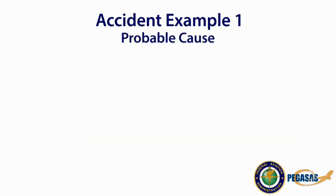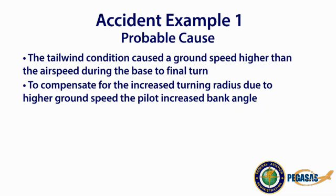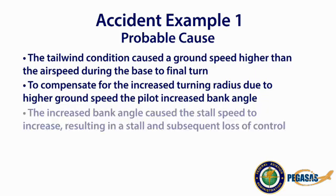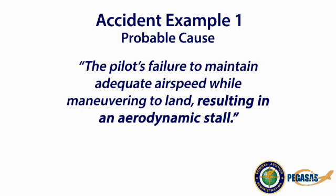During the evaluation, the NTSB determined the probable cause to be the tailwind condition, which caused a ground speed higher than the airspeed during the base to final turn. To compensate for the increased turning radius due to the higher ground speed, the pilot increased the bank angle. The increased bank angle caused the stall speed to increase, resulting in a stall and subsequent loss of control. The NTSB determined the probable cause to be the pilot's failure to maintain adequate airspeed while maneuvering to land, resulting in an aerodynamic stall.